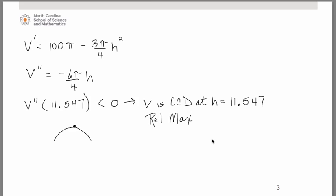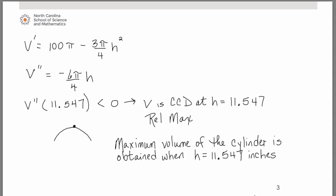And that's how you can use the second derivative test as an alternative to doing the first derivative test and the number line analysis. If you go back to the original question, all we were asked to determine was the height of the cylinder that would provide for the maximum volume. And we now have found that the maximum volume of the cylinder is obtained when h is approximately 11.547 inches.